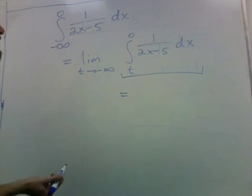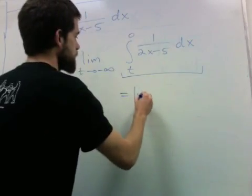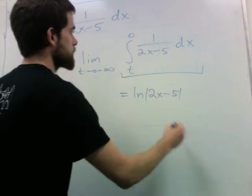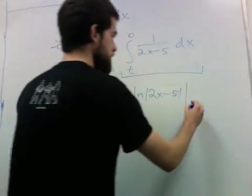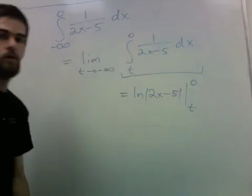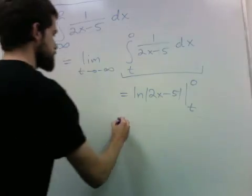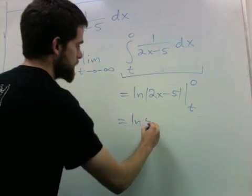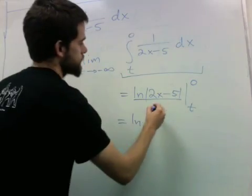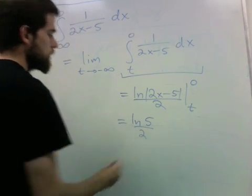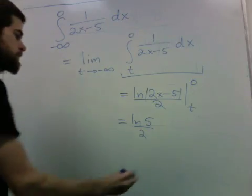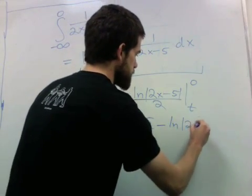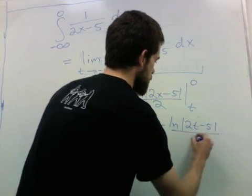This is 1 over 2x minus 5. So if you think through it, an antiderivative of that is natural log absolute value 2x minus 5. So if I plug in 0, I get natural log of 5. So this is 2t minus 5 over 2.